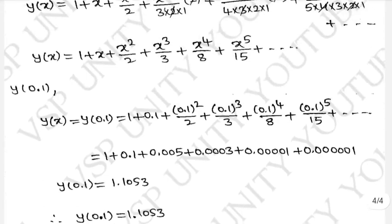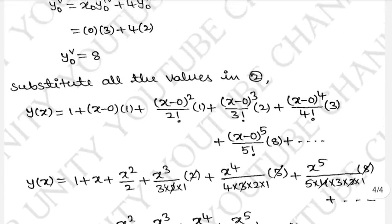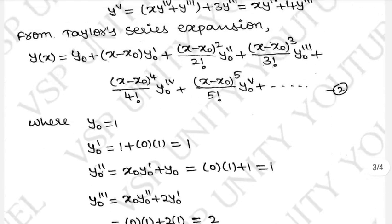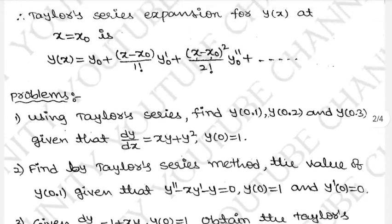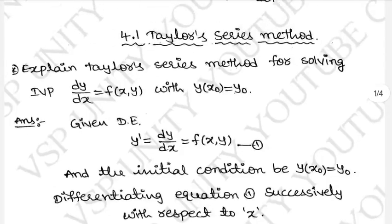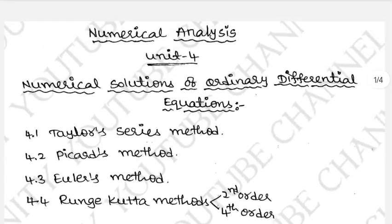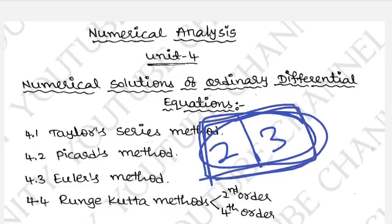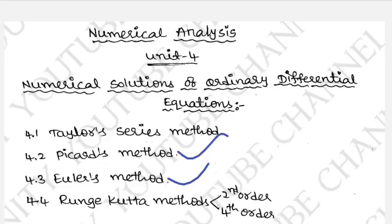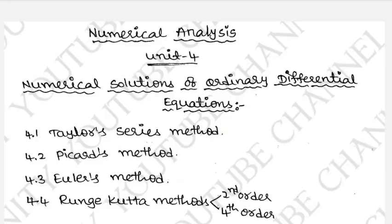y(0.1) = 1.1053 by Taylor series expansion. I hope you all understand — a very easy problem. Next we will cover Picard's method. If you want to subscribe to my channel, don't forget to subscribe. For Unit 2 and Unit 3, only important questions. For Unit 4: Picard's method, Euler's method, Runge-Kutta 2nd and 4th order method. Thank you for watching. Have a nice day.